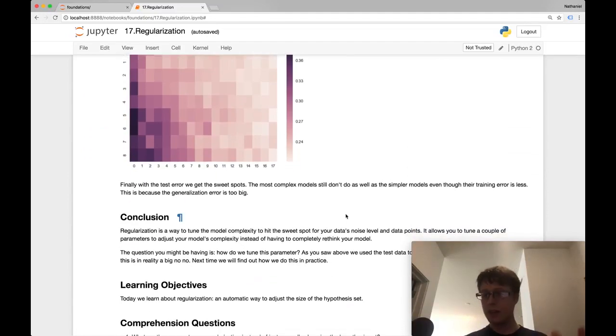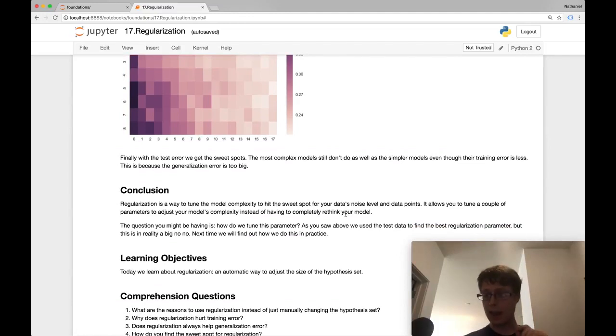This is the conclusion. The real solution, at least programmatically, is to use regularization. Regularization can give you very fine-tuned results as to what you want the bias-variance trade-off to actually be. It allows the model to programmatically choose where it should reduce the model size instead of you having to choose it yourself.